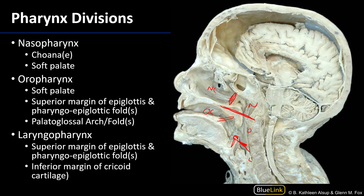The laryngopharynx is going to have an inferior border — it's not patent here, but if we were to open this up, there is an inferior border below the cricoid cartilage, approximately at the level of the sixth cervical vertebra.